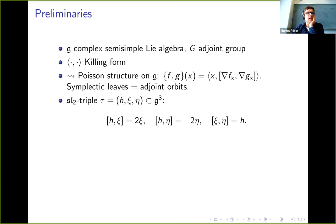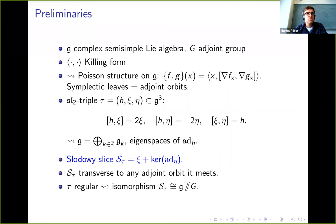If we take an SL2 triple, that's just a triple of elements satisfying the standard SL2 relations, then G decomposes into eigenspaces of H. Moreover, we can write down the following so-called Slodowy slice. This is just an affine subspace, ξ plus the kernel of, or the centralizer of η.